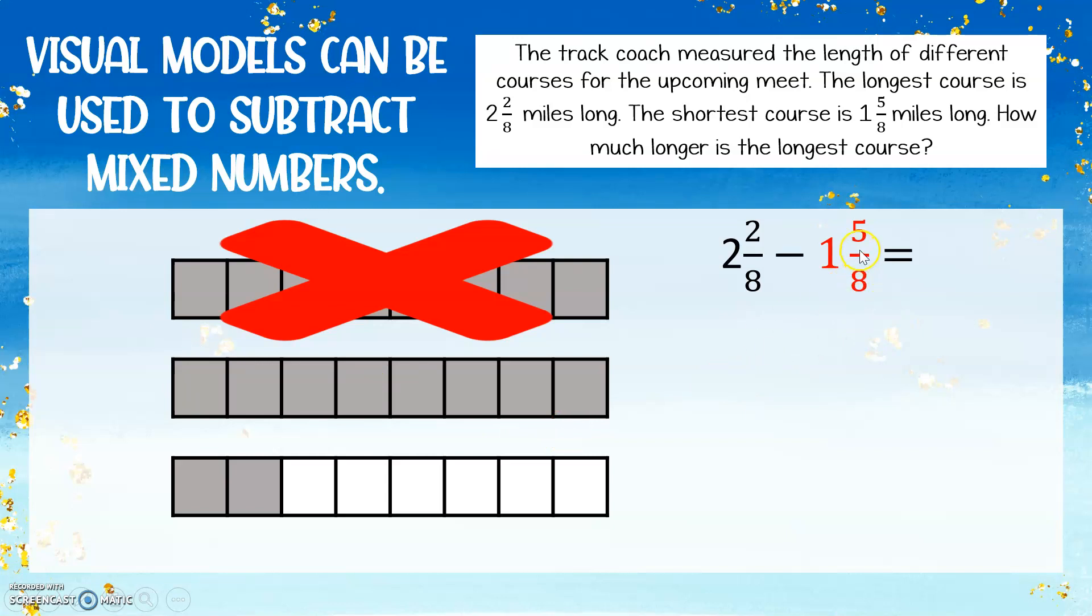Now I'm not done yet. I still need to take away the 5 eighths. So I'm going to X out 5 of my eighths that I have still shaded: 1 eighth, 2 eighths, 3 eighths, 4 eighths, 5 eighths. So now that I've crossed out 1 whole and 5 eighths, I can figure out how many eighths I have left. This is the difference between the length of the courses. What's left after I take away 1 and 5 eighths? We have 1 eighth, 2 eighths, 3 eighths, 4 eighths, 5 eighths shaded. So our answer will be 5 eighths.